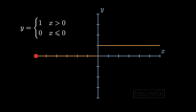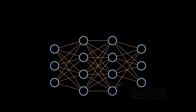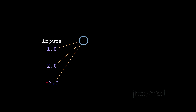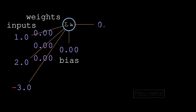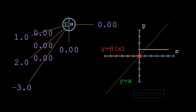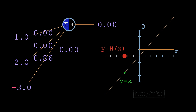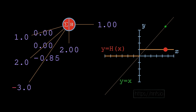Using the step function as an activation function, every neuron in the hidden and output layers will have this activation function applied after you compute inputs times weights plus bias. As we tweak the weights and biases, we can see the impact on output. The key takeaway is the output is always either a 0 or a 1 — nothing more.